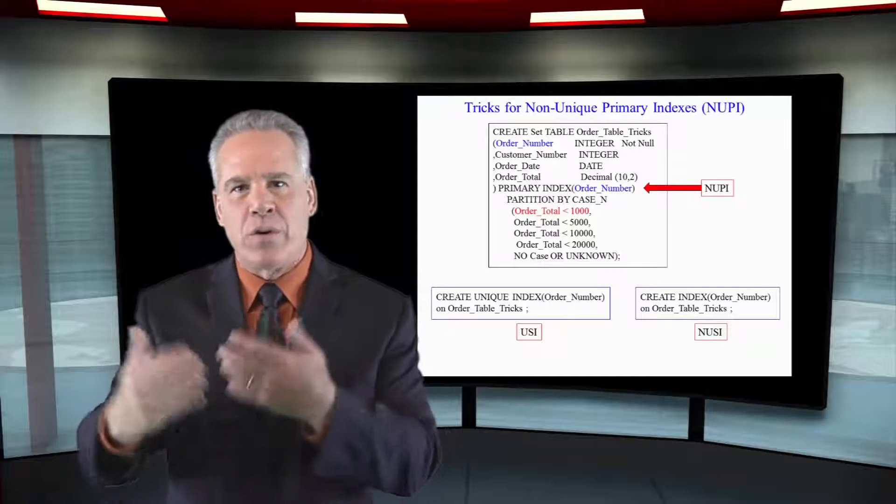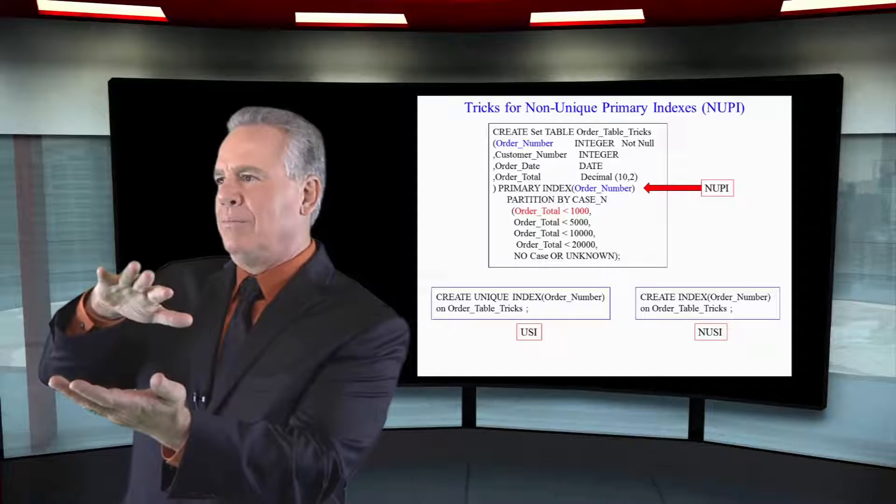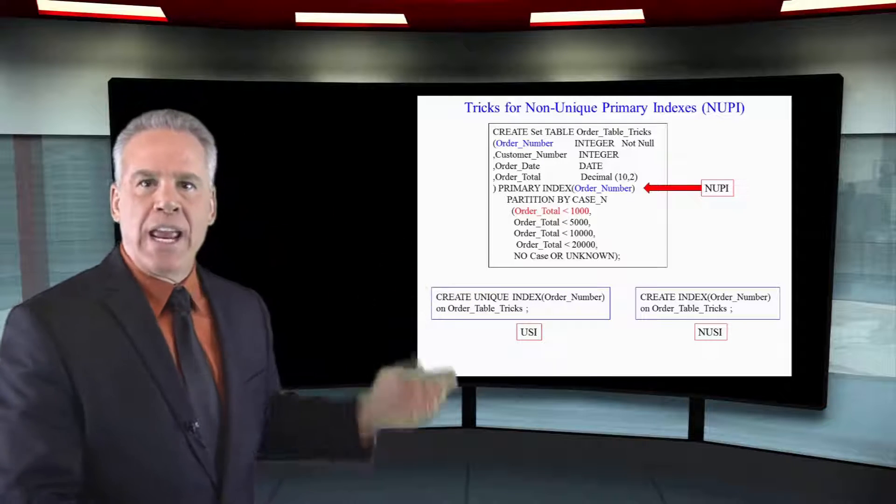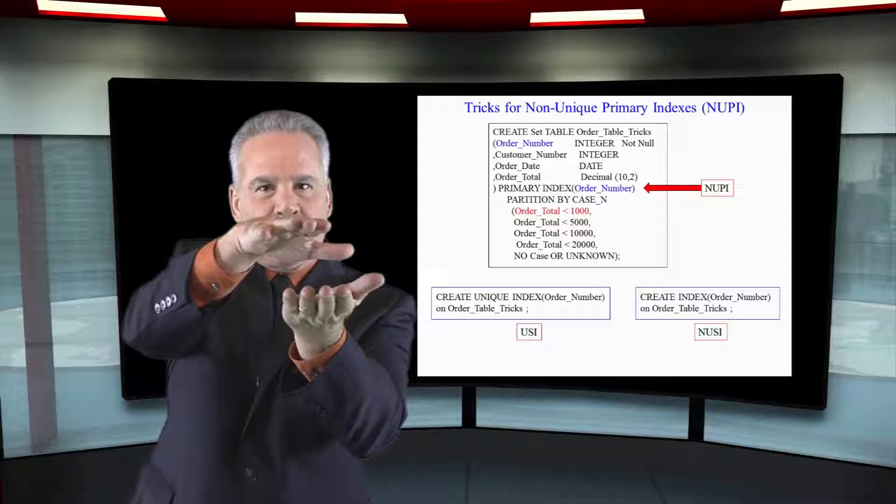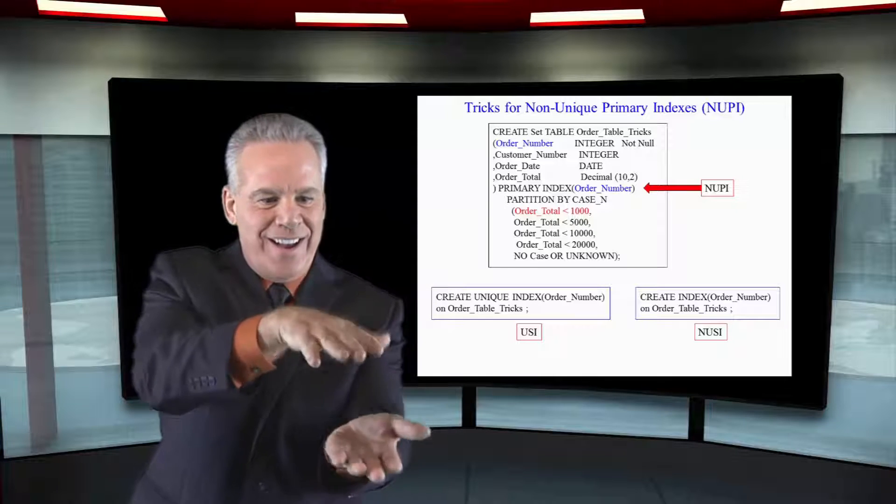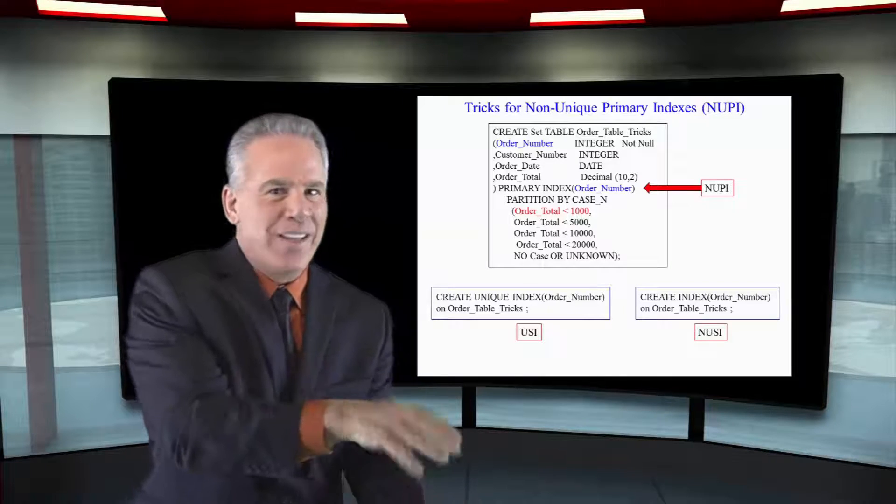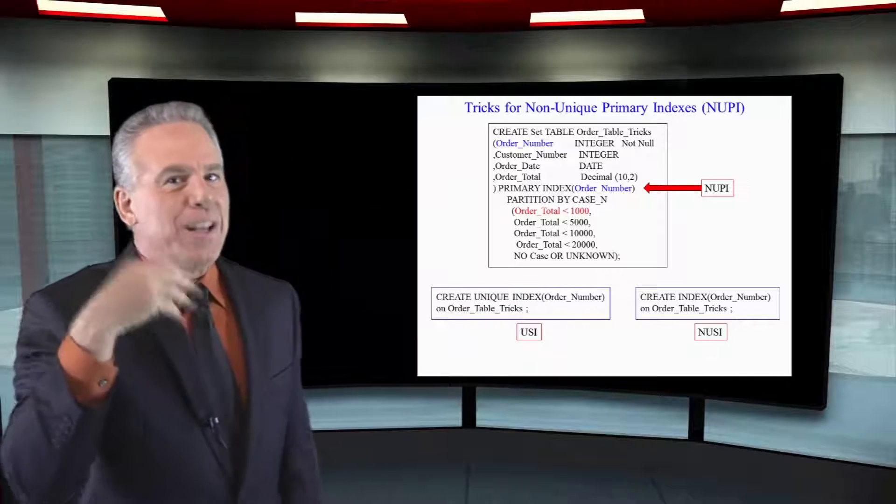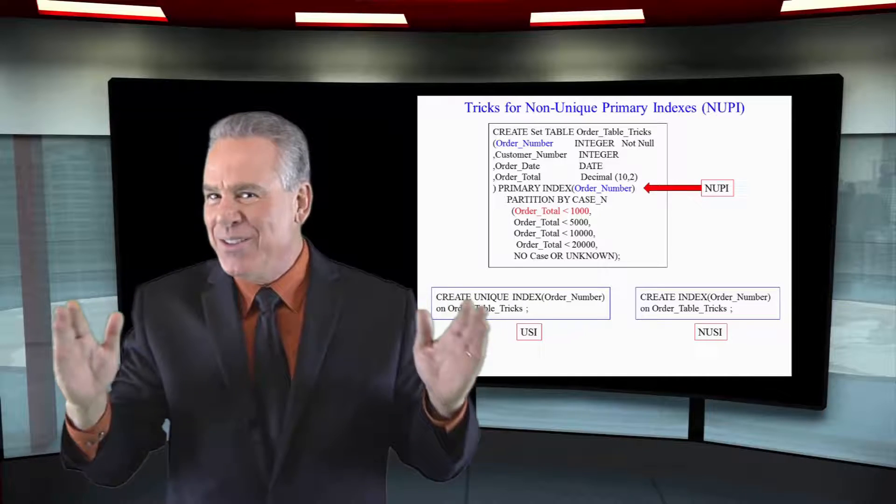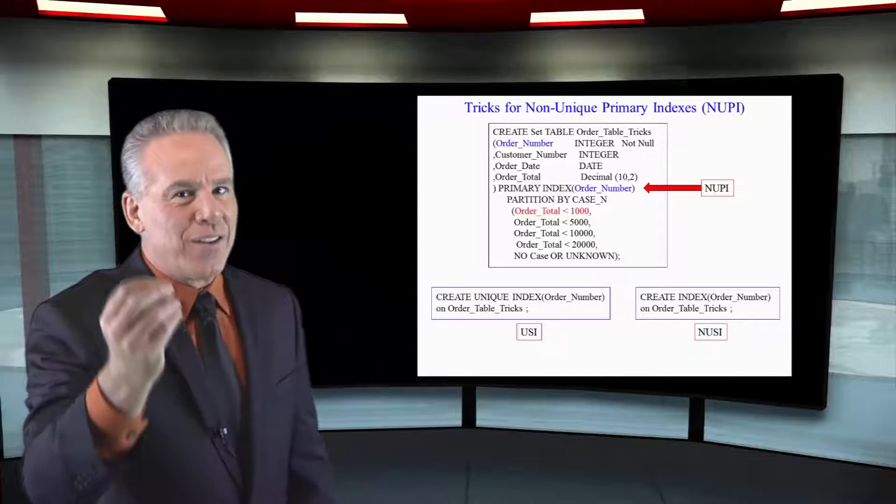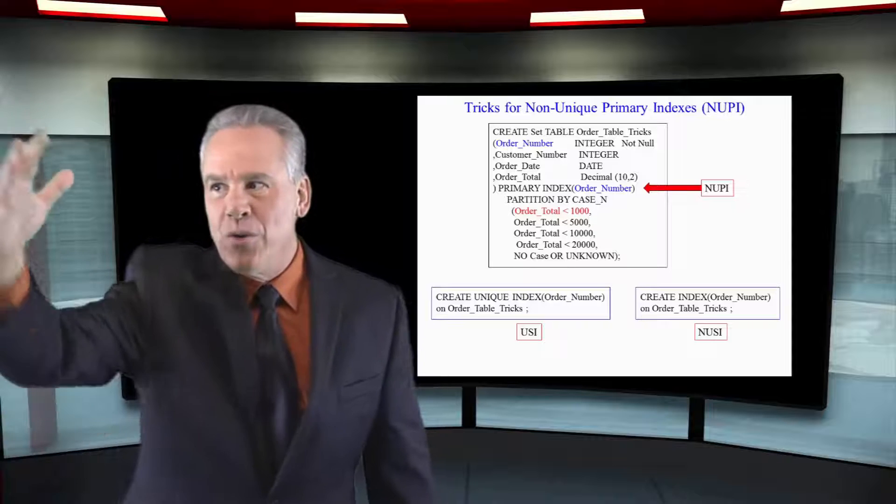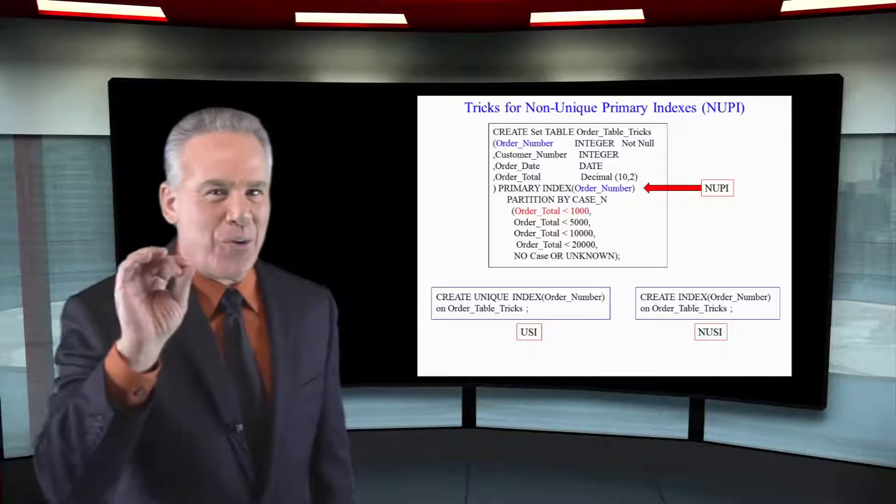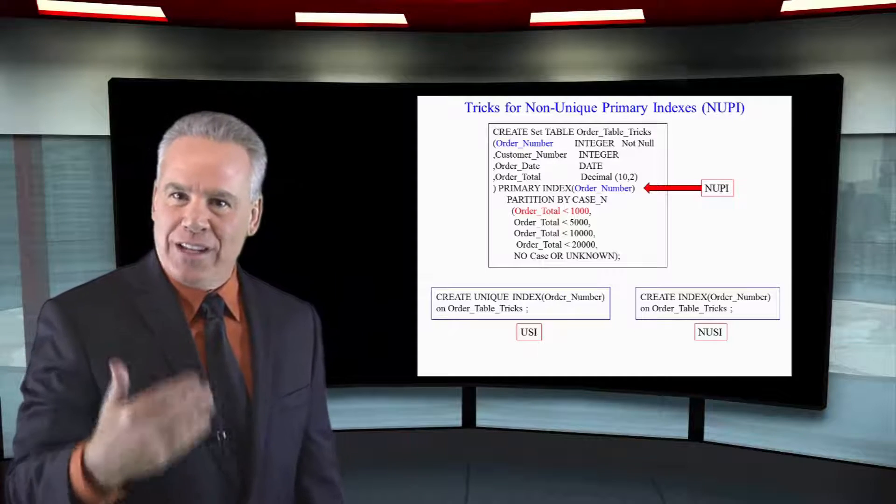If I say select everything where order number equals 123456, they hash it. They know that it's gone to one amp, but since there's a lot of different partitions on that amp for that table, they're not sure where it's at, so they have to look in each partition. You see, partitioning helps in range queries, but it will slow down some queries where you're doing primary index lookups. Again, they know which amp, they just aren't sure quite which partition, so the search takes longer.